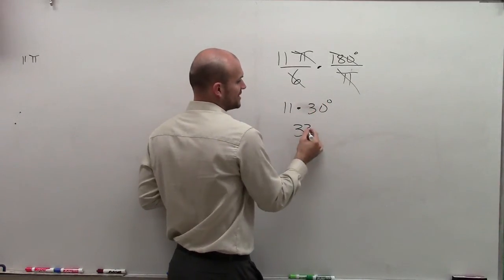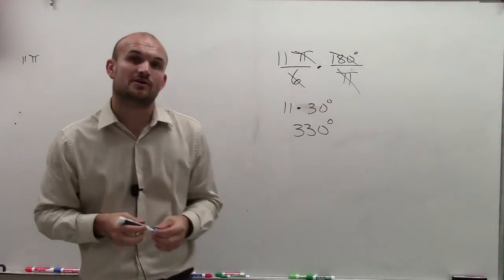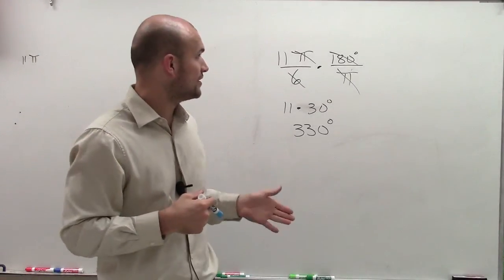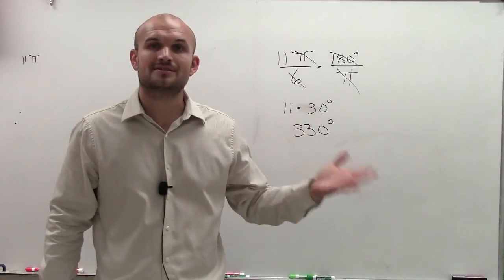Well, 11 times 30 degrees is 330 degrees. So there you go, ladies and gentlemen. That's how you convert from radian mode to degree mode. Thanks.